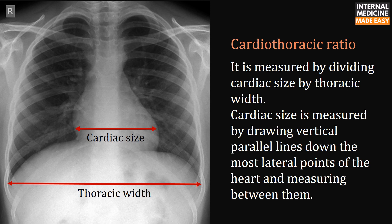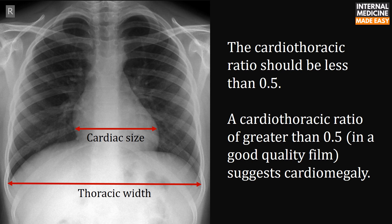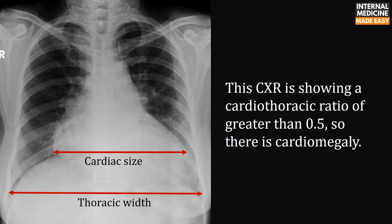The cardiothoracic ratio is measured by dividing cardiac size by thoracic width. Cardiac size is measured by drawing vertical parallel lines down the most lateral points of the heart and measuring between them. The cardiothoracic width is measured by drawing vertical parallel lines down the inner aspect of the widest points of the ribcage. The cardiothoracic ratio should be less than 0.5 — a ratio greater than 0.5 on a good quality film suggests cardiomegaly. This chest x-ray is showing a cardiothoracic ratio greater than 0.5, indicating cardiomegaly.